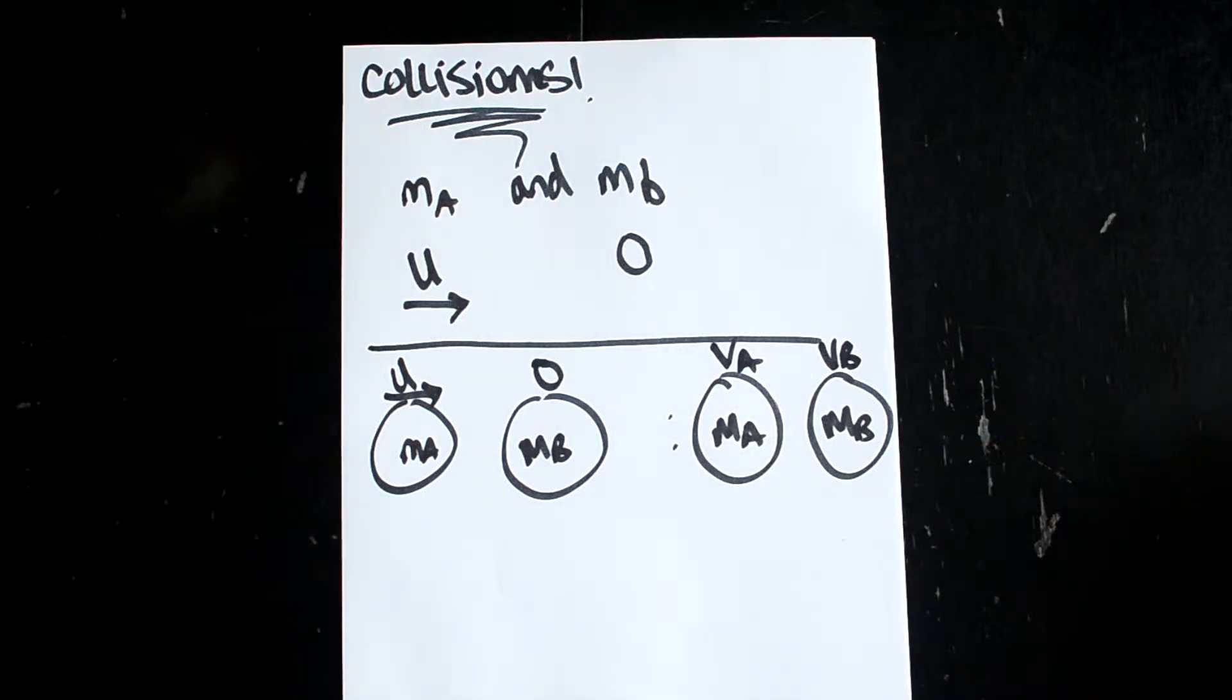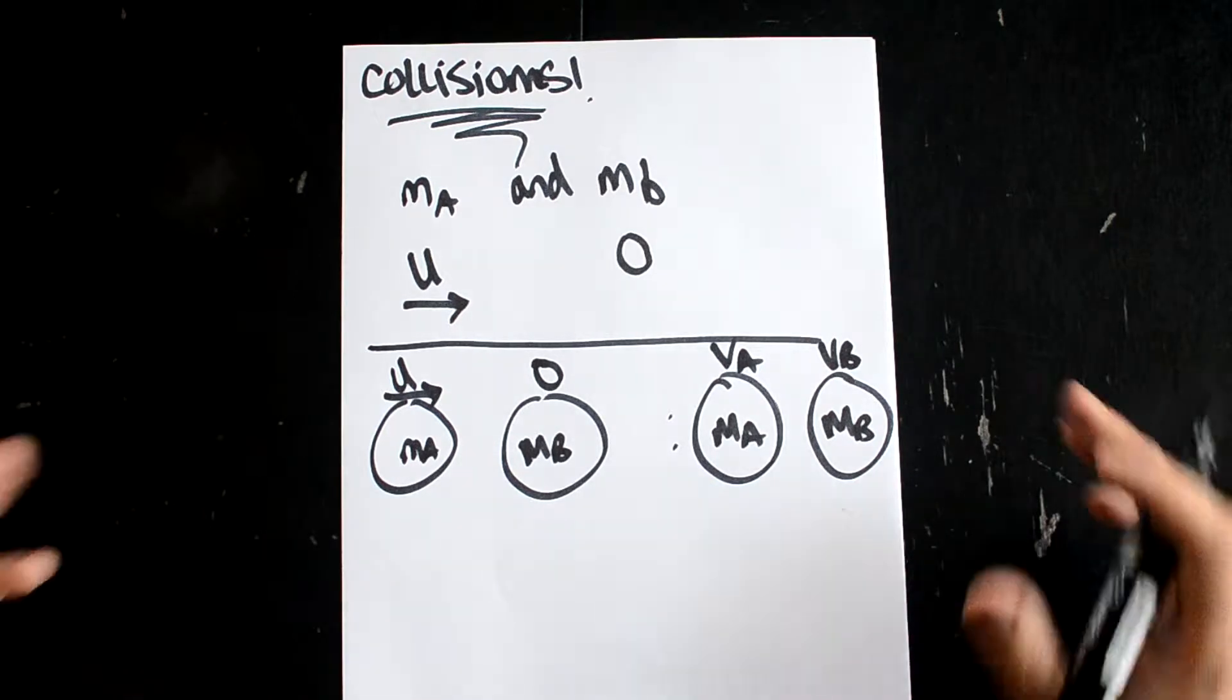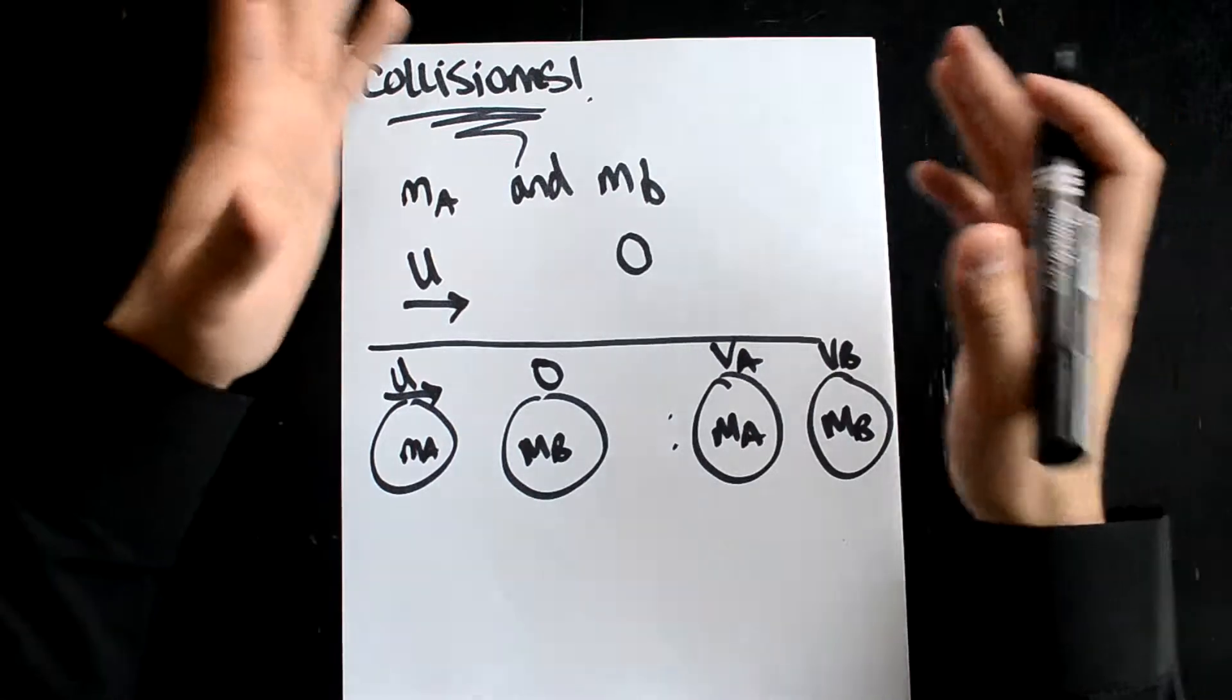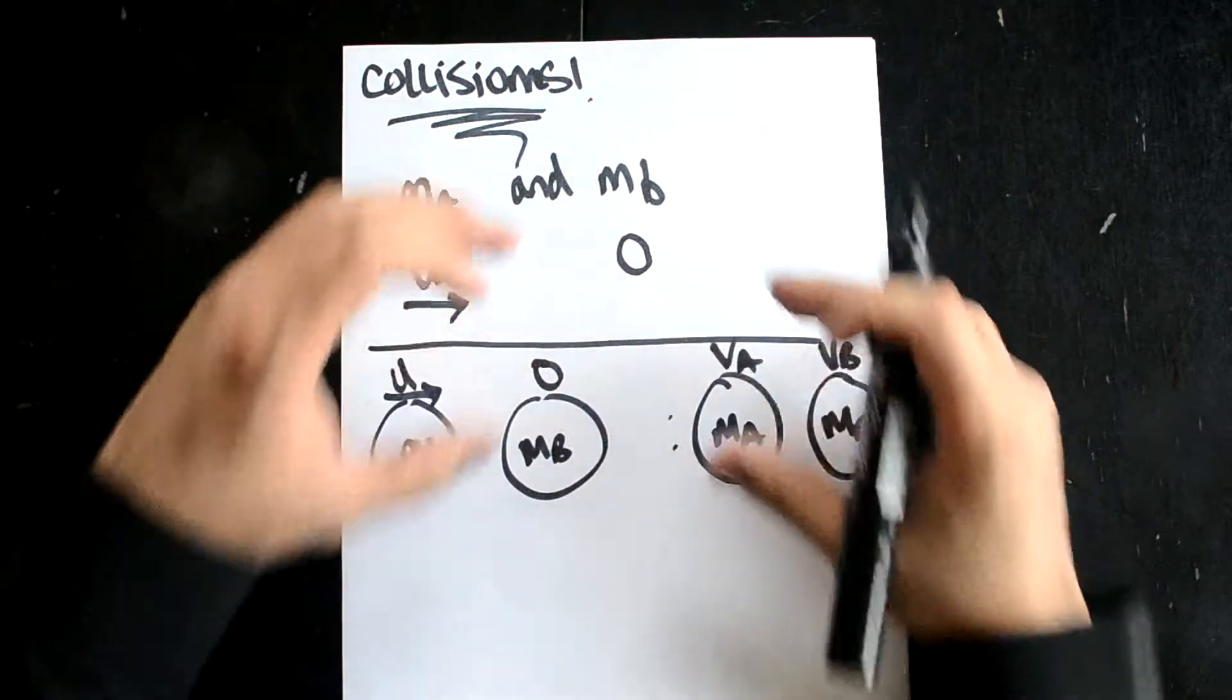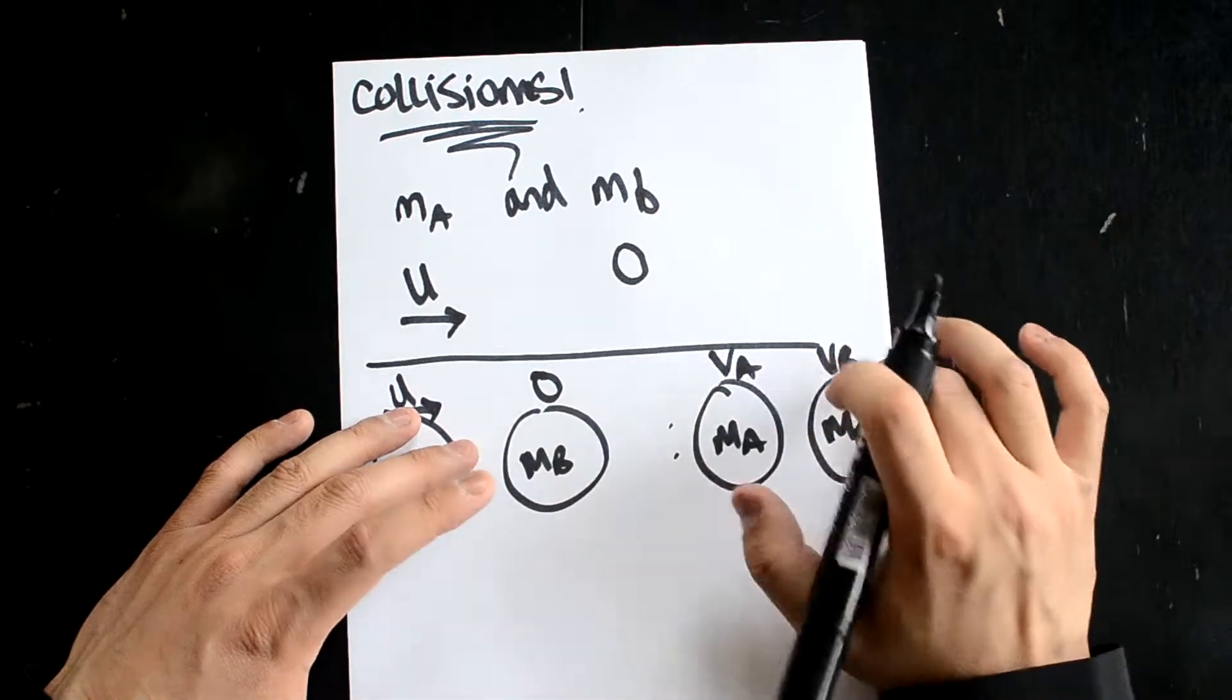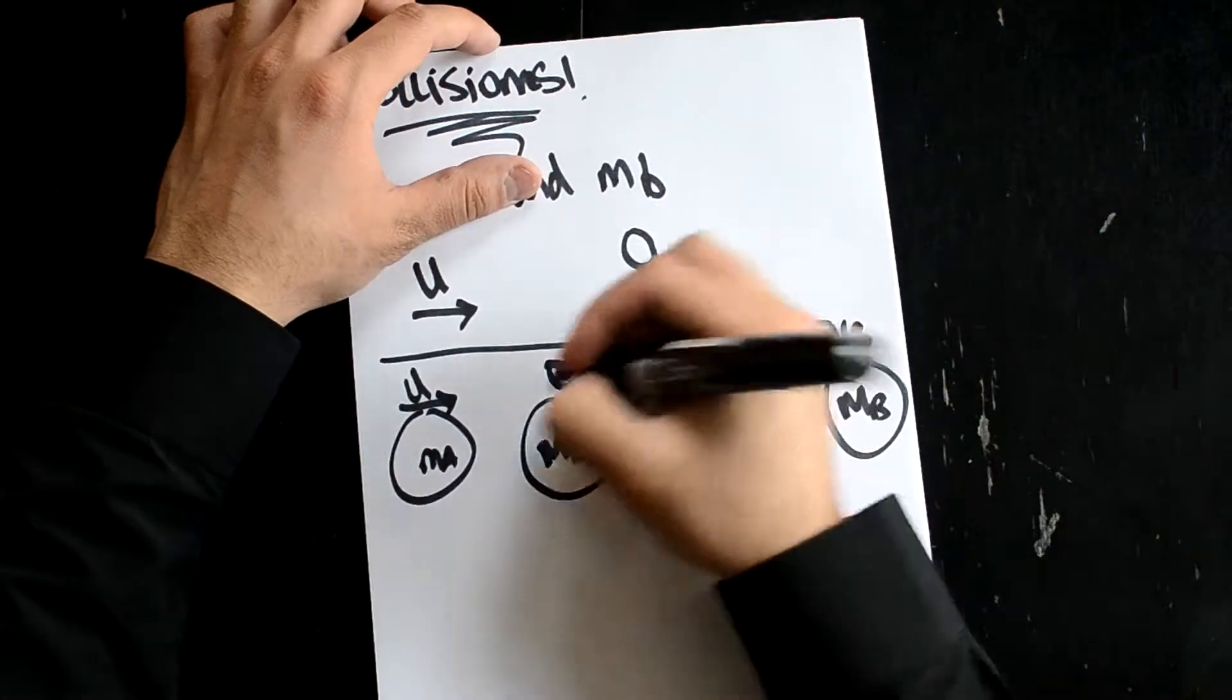The first thing we can do to simplify things is use the conservation of momentum. We're going to be using two different equations: conservation of momentum and Newton's law of restitution. We'll combine both these laws together to get two expressions for velocity of a and velocity of b after the collision.